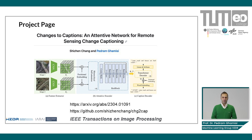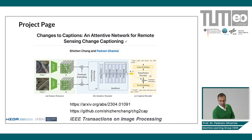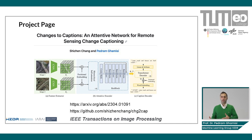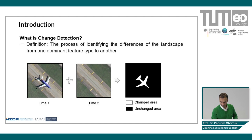Let's start the second example. The second example has also been submitted to IEEE Transactions on Image Processing and is under revision, but you can find the arXiv paper at this link, and the code will be uploaded on this GitHub link as well. The title of the paper is 'Changes to Captions: An Attentive Network for Remote Sensing Change Captioning.' In contrast with the previous work where we tried to produce realistic images from text, here we want to produce text from images.